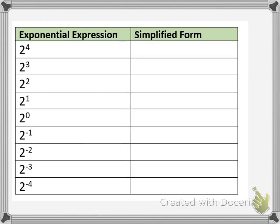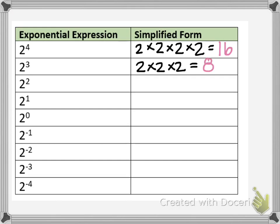Now that we've looked at the basics of positive integer exponents, let's fill out a table to see some patterns for recognizing how to simplify zero and negative exponential expressions. In the first row, 2 to the fourth power means 4 factors of 2, which equals 16. 2 to the third power is 8. 2 squared is 4. And 2 to the first power is just 2.